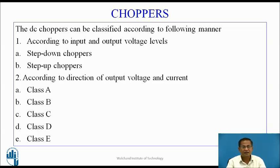Class A and Class B are single-quadrant choppers. Class C and Class D are two-quadrant choppers. And Class E is a four-quadrant chopper.